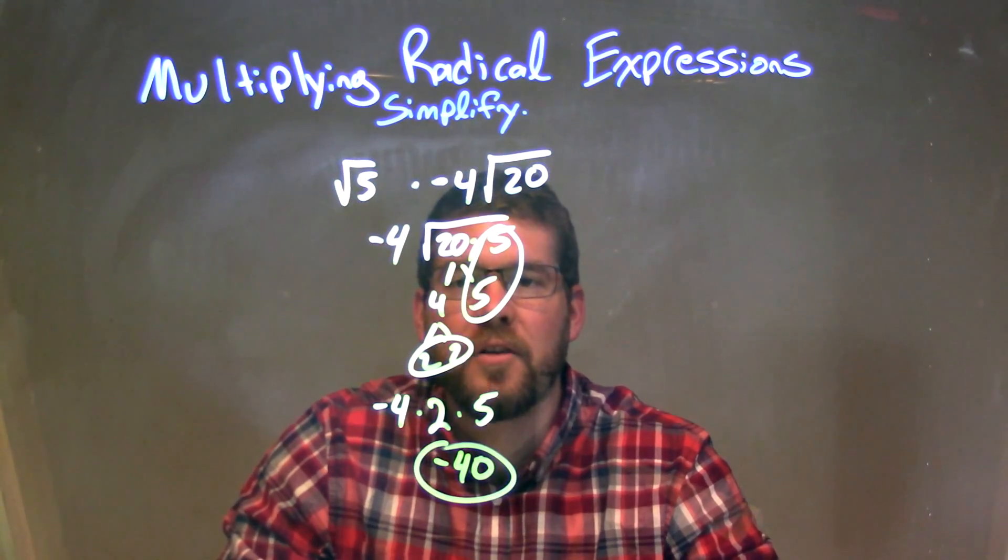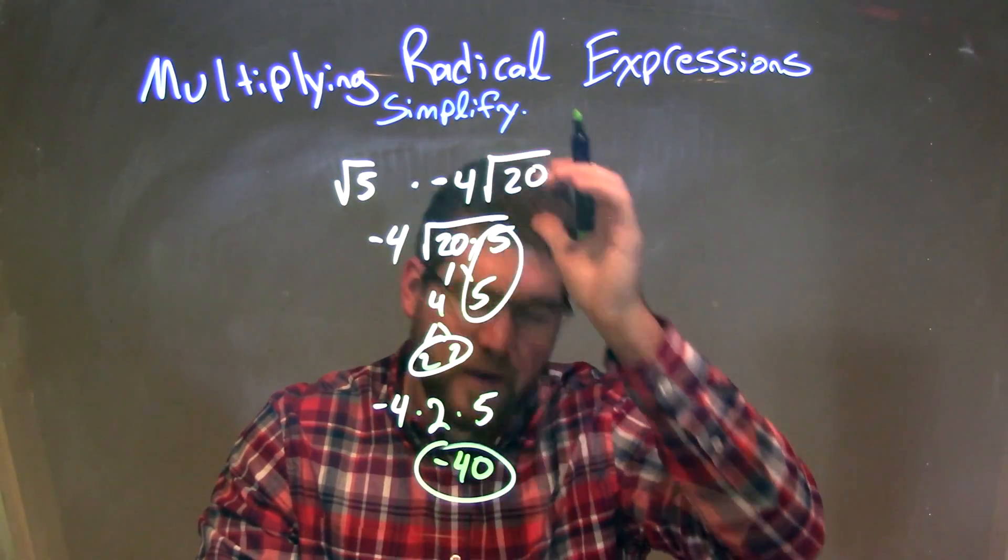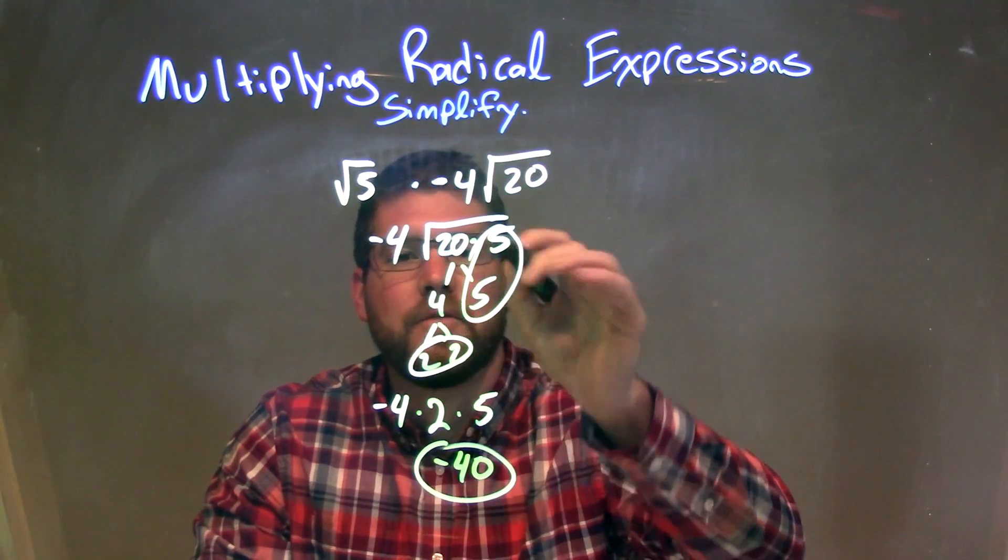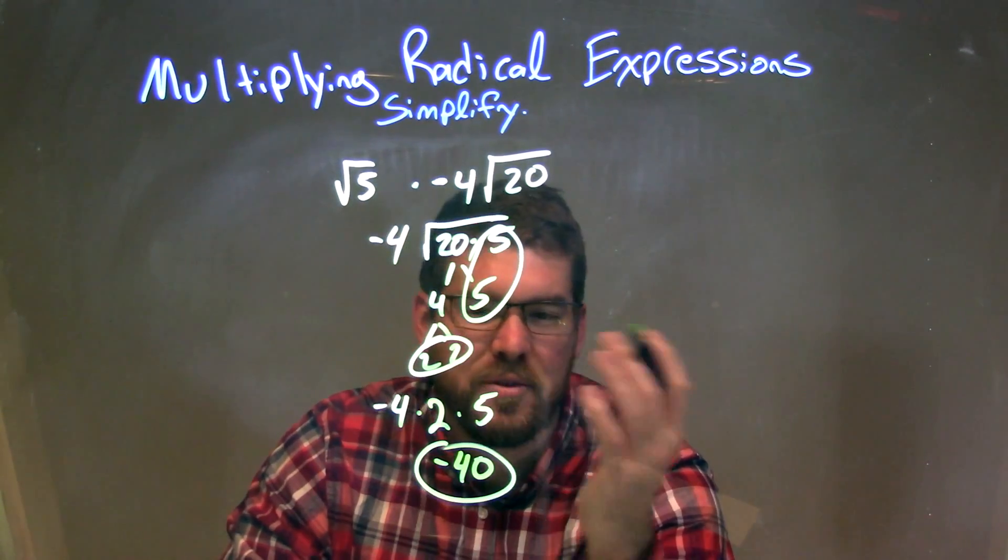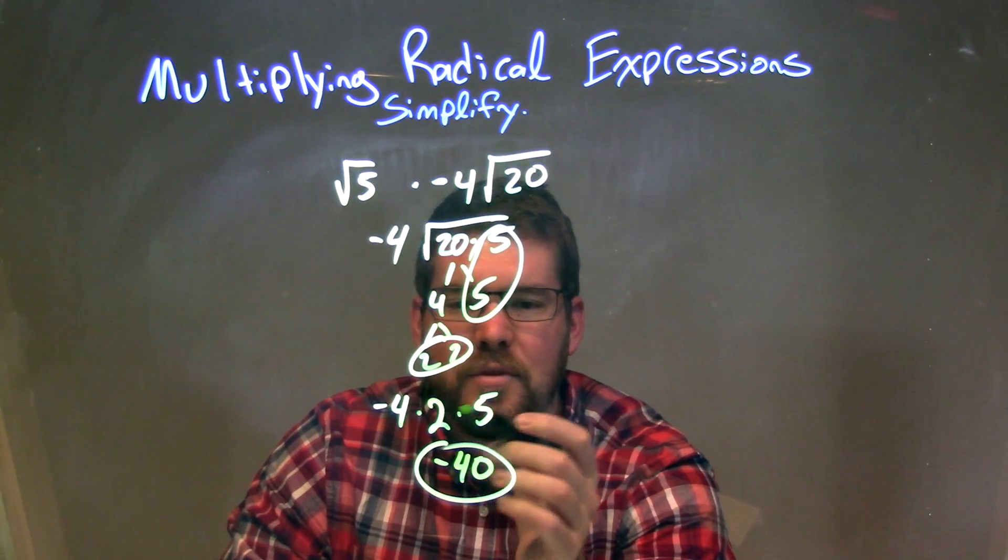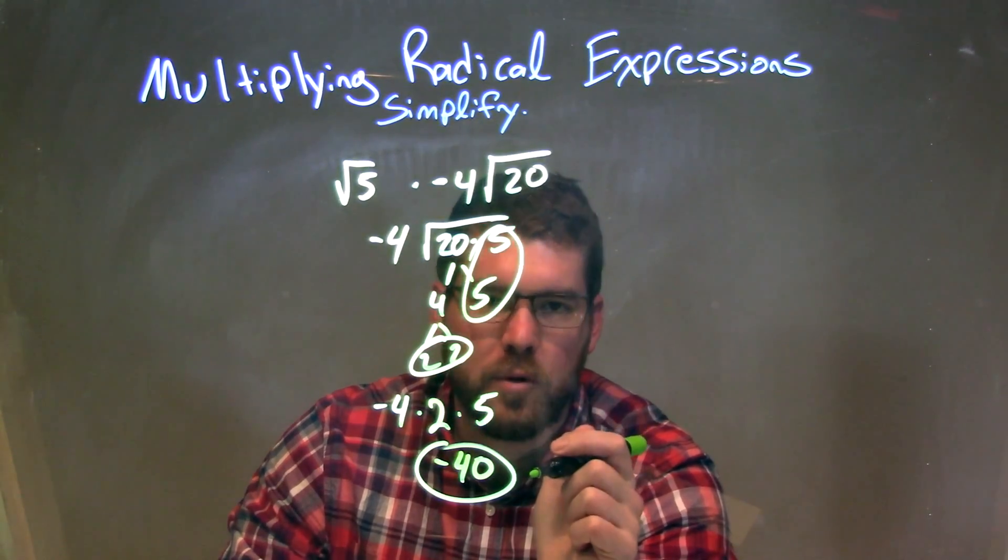Then we broke down 20 to be 2 times 2 times 5, and then times the 5 that was there. Then we circled our pairs, pair of 2s and pair of 5s, brought them to the outside as singles. There's nothing left inside the square root, so it disappeared. And then negative 4 times 2 times 5 gives us our final answer of negative 40.